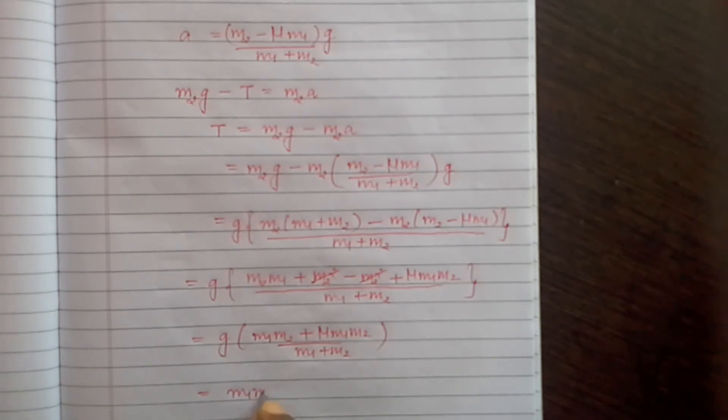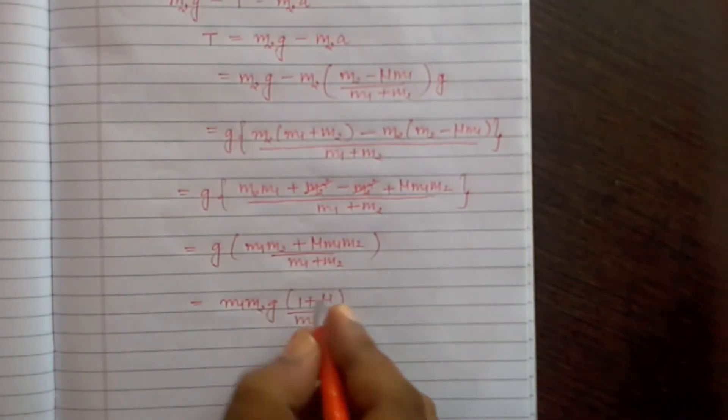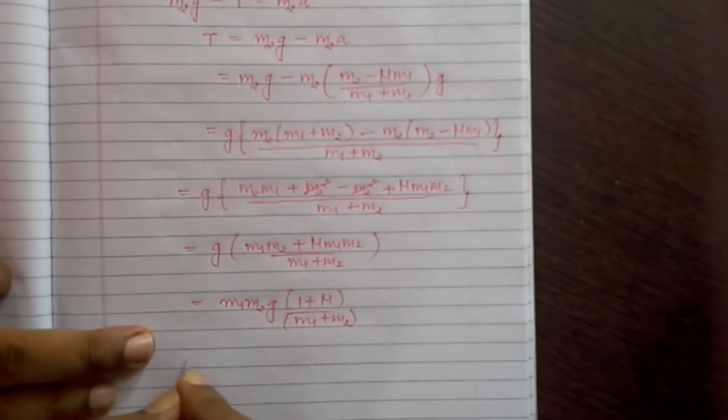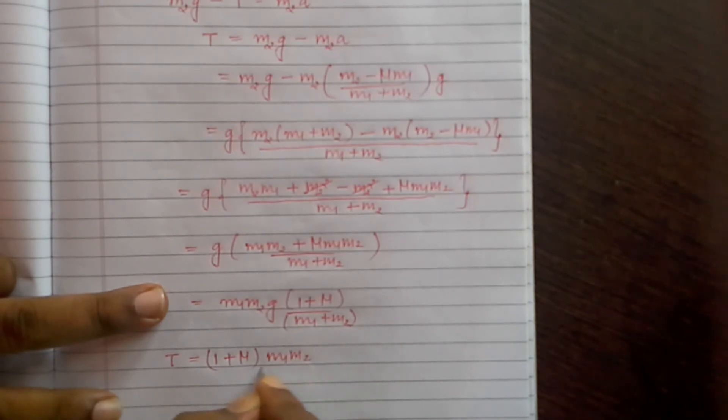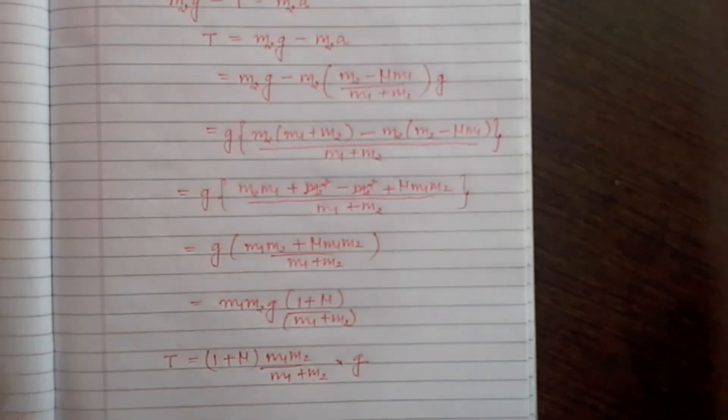Taking M1M2 common: M1M2 times g times (1 plus mu) divided by (M1 plus M2). We can rearrange it and write finally: tension T is equal to (1 plus mu) times M1M2 divided by (M1 plus M2) times g. So this is the expression for tension and acceleration.